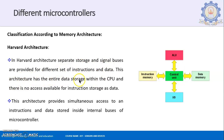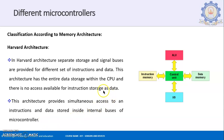Harvard architecture has its entire data storage within the CPU, and there is no access available for instruction storage as data. This architecture provides simultaneous access to both instructions and data stored inside the internal bus of a microcontroller — you can transfer instructions and data at the same time. That is Harvard architecture.